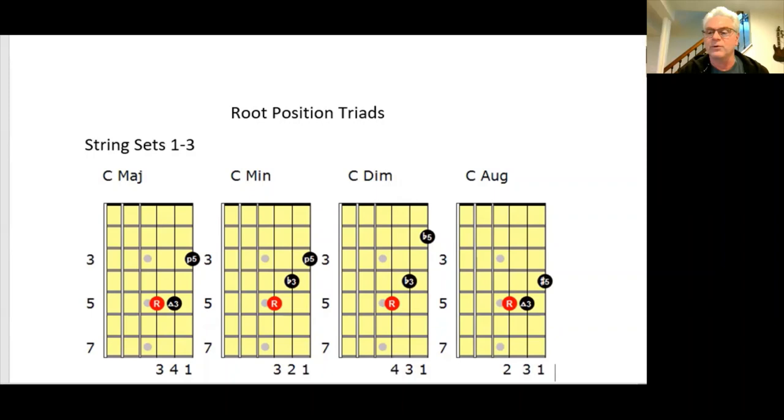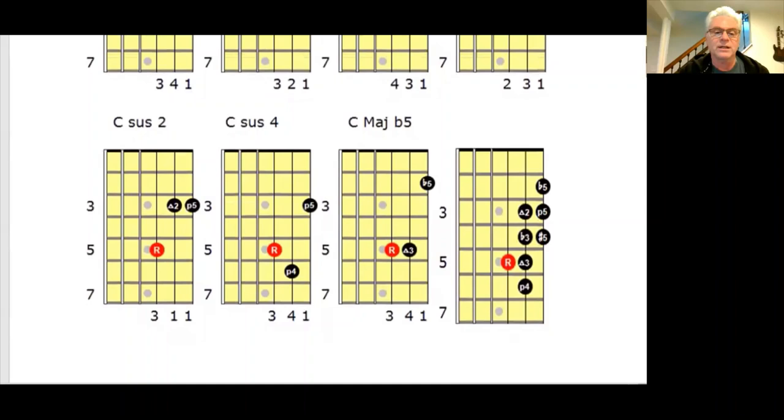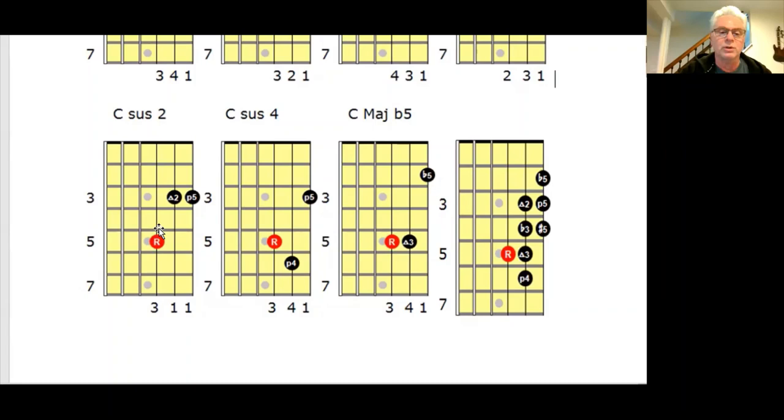The next set we have is C sus two. Here's our C, our root, our second, D, and our fifth is a G. I've used my third and your first finger to bar that. The next we have a C sus four. So we raise the four. There's your fourth and your fifth. Use your three, four, one fingers.